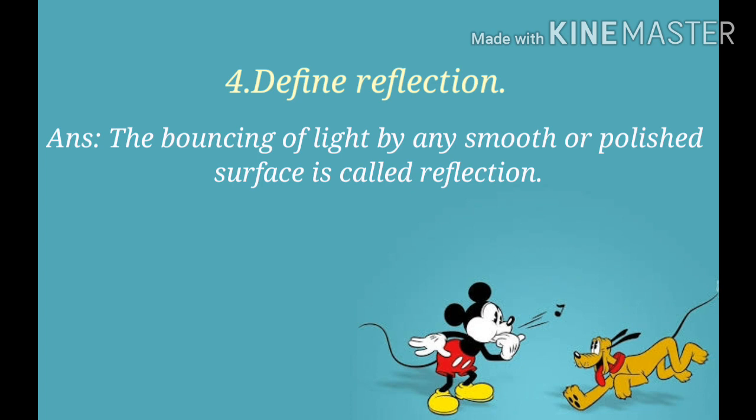The bouncing of light by any smooth or polished surface is called reflection. Define reflection: the bouncing of light by any smooth or polished surface is called reflection.